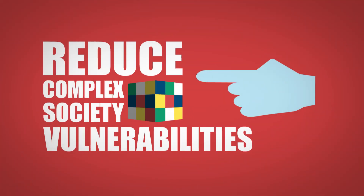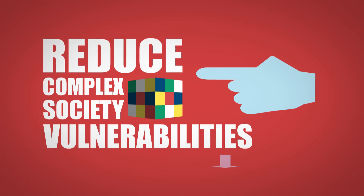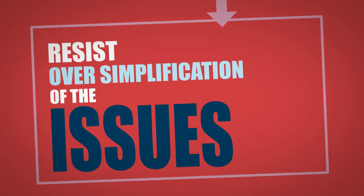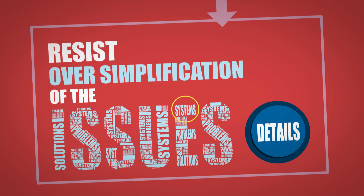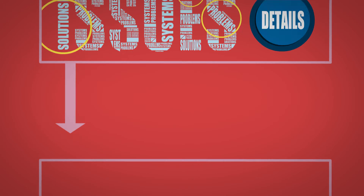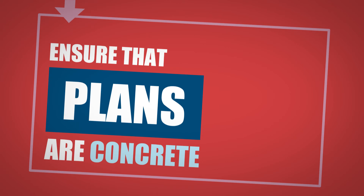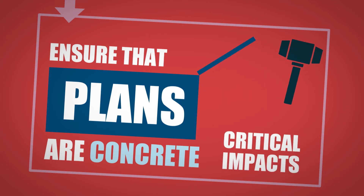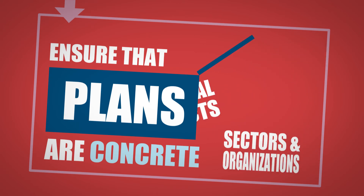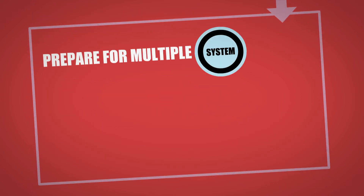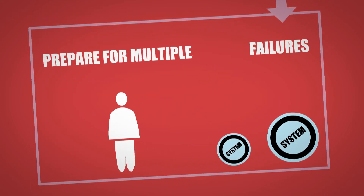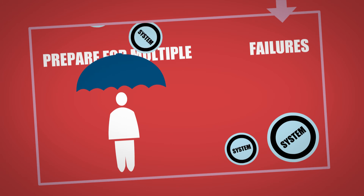To reduce these vulnerabilities, decision makers must remember to do the following: Resist oversimplification of the issues and allow for full understanding of the complex nature of systems, problems, and solutions. Ensure that plans are concrete, address critical impacts, and consider all related sectors and organizations. Prepare for multiple system failures and look for ways to restore services quickly.